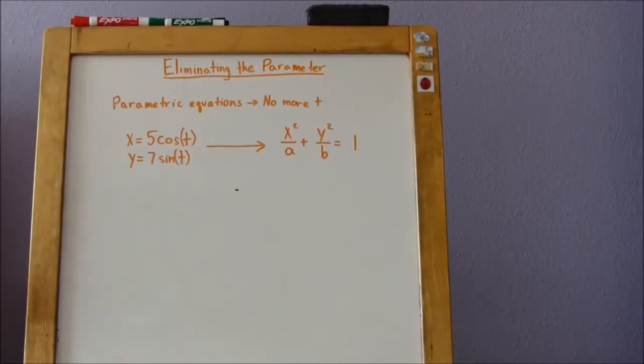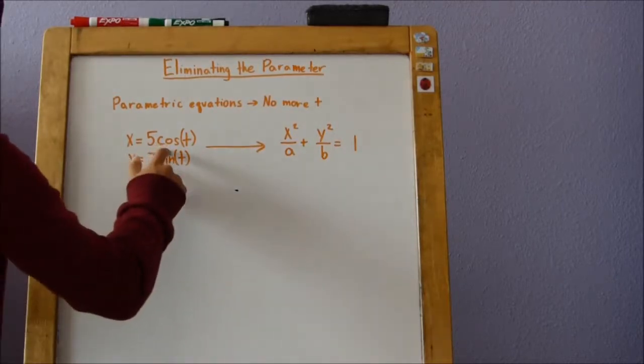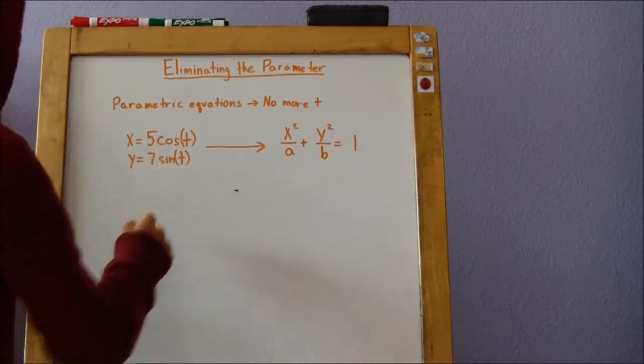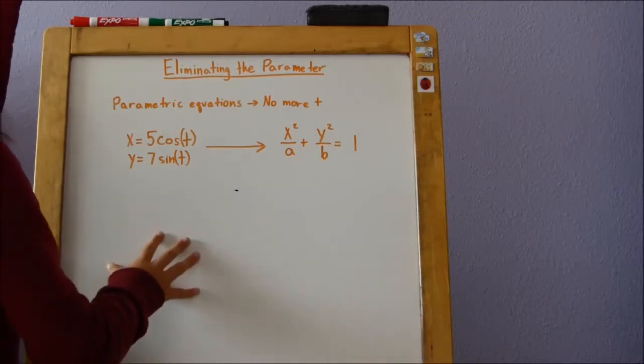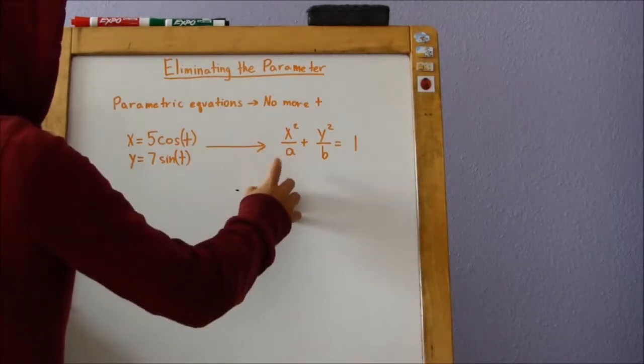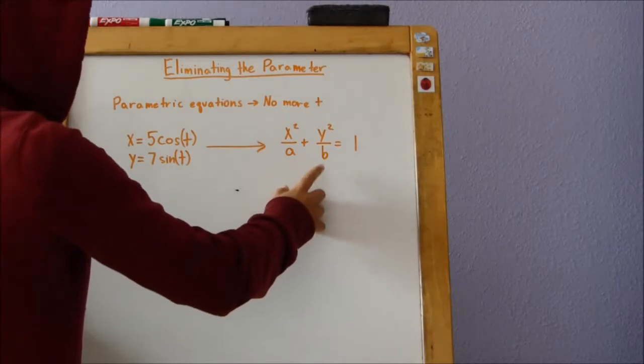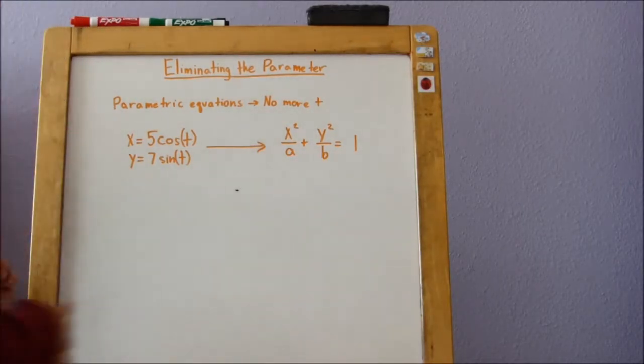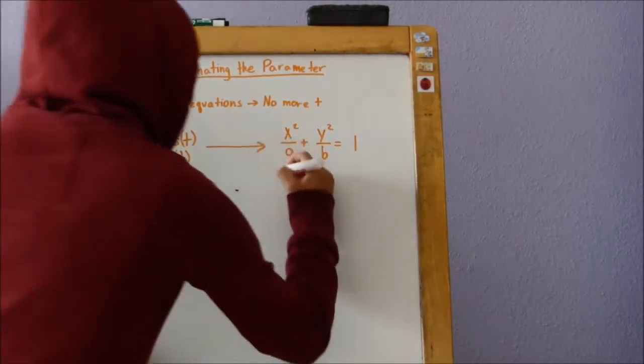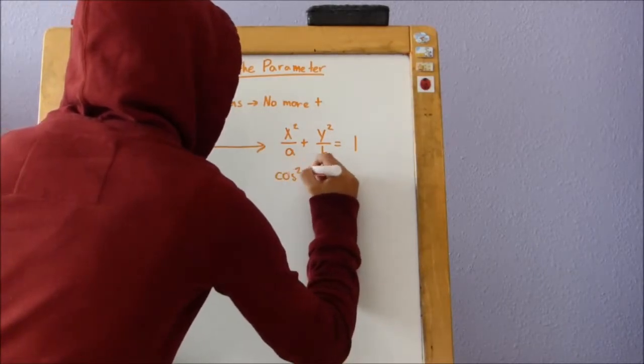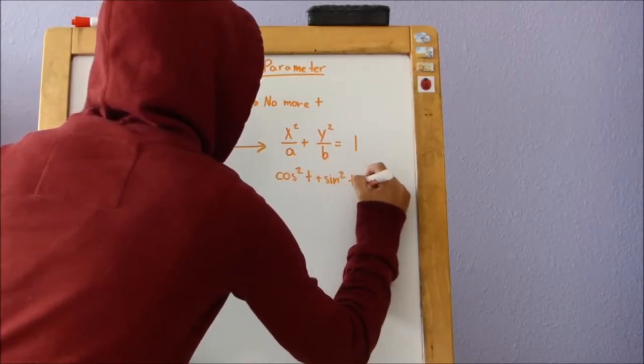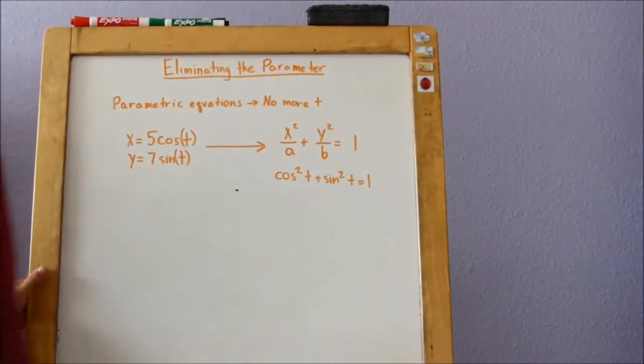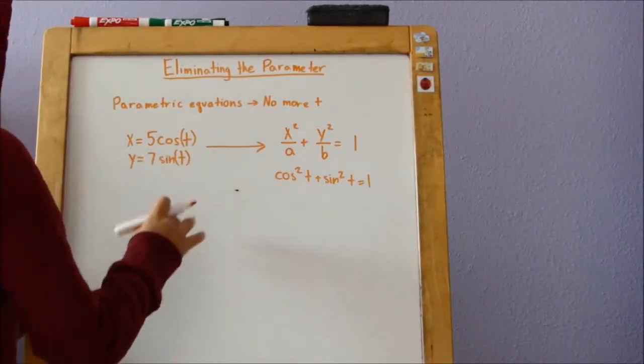You can also eliminate the parameter with equations that have cosine or sine in them. The only difference is that instead of having a y equals equation, this time we're going to have x squared divided by a plus y squared divided by b equals 1. The way we're going to do this is we're going to use the property cosine squared t plus sine squared t equals 1. And we're just going to solve it from there.